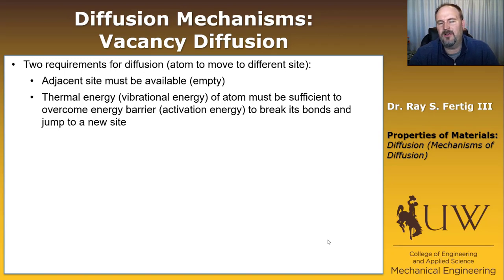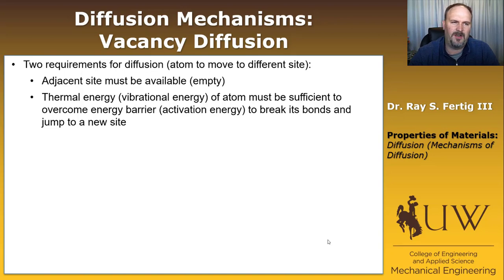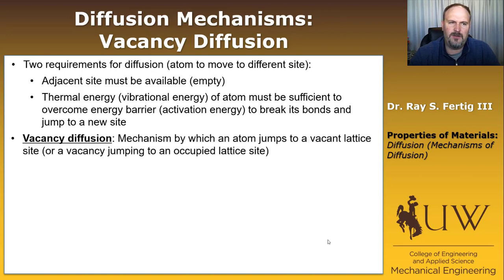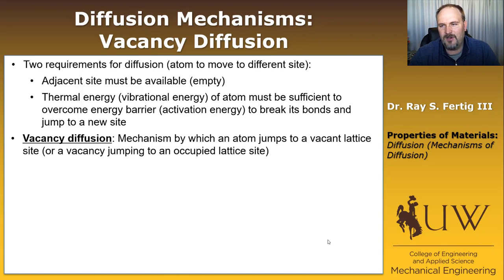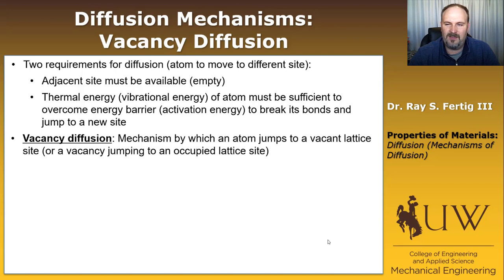We need enough thermal energy to allow atoms to diffuse, which means diffusion is a temperature-dependent process — something we'll cover in future lectures. One mechanism by which this can happen is vacancy diffusion: an atom jumps to a vacant lattice site, or equivalently, a vacancy jumps to an occupied lattice site. Vacancies almost always have an occupied lattice site to jump to, whereas atoms frequently won't have a vacancy nearby.